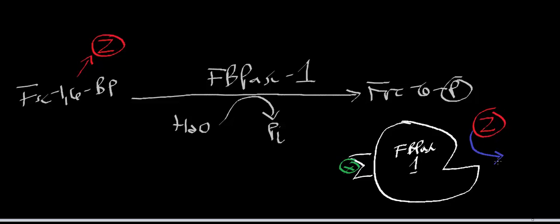One important thing to understand is that the way fructose 2,6-bisphosphate stimulates glycolysis is by activation of PFK1. The way it inhibits gluconeogenesis is by allosteric inhibition of fructose bisphosphatase 1. I just wanted to clear that up. See you in the next video.